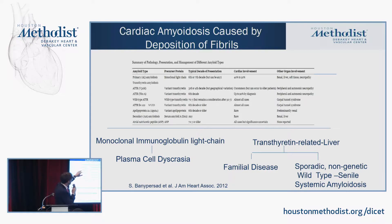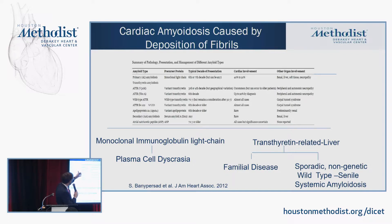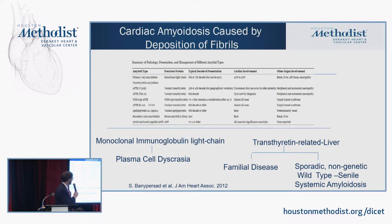AL amyloidosis typically occurs in the 6th or 7th decade, with about 50% of patients having cardiac involvement. For transthyretin amyloidosis, it can be genetic — with multiple variants — or the wild type (senile). The Val-122 isoleucine mutation is carried by 3–4% of African Americans and almost always involves cardiac involvement, often manifesting as bilateral carpal tunnel syndrome. If you have a patient with bilateral carpal tunnel syndrome, always think about amyloidosis.